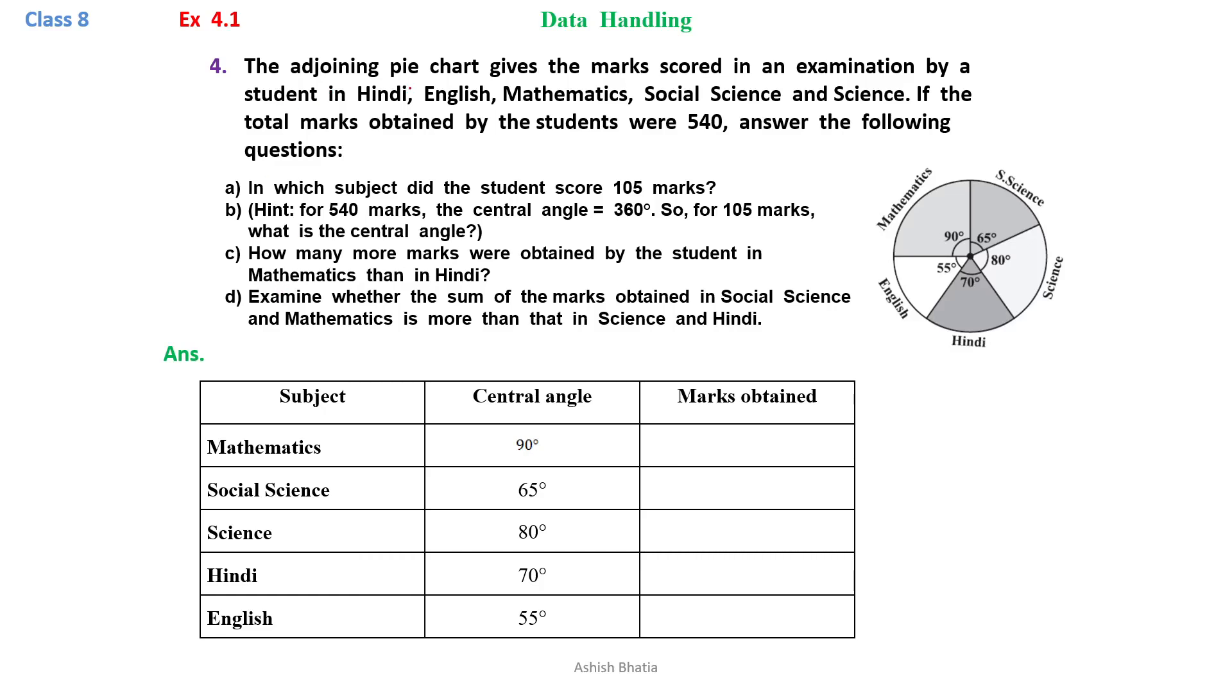Question number 4. The adjoining pie chart gives the marks scored in an examination by a student in Hindi, English, Mathematics, Social Science and Science. If the total marks obtained by the students were 540, answer the following questions. In which subject did the student score 105 marks? We have to tell in which subject he scored 105 marks.